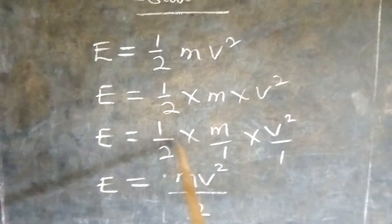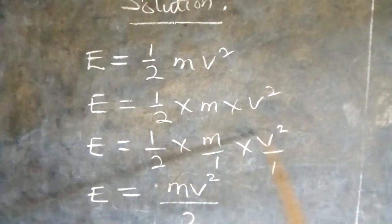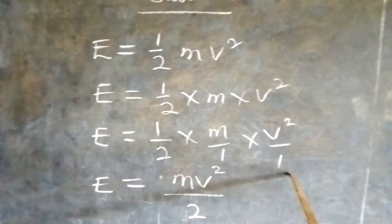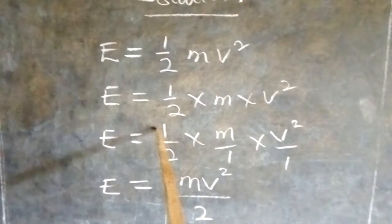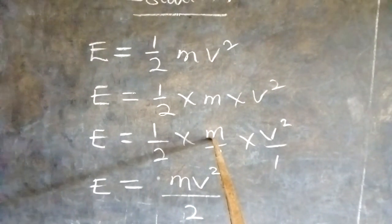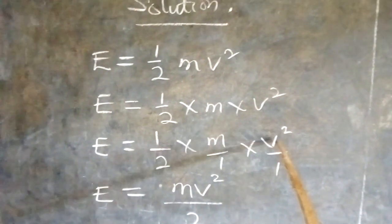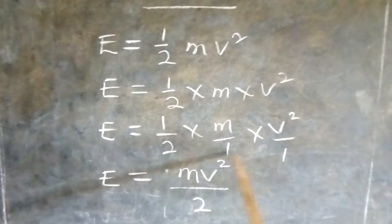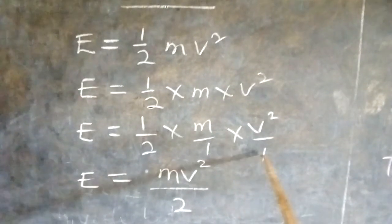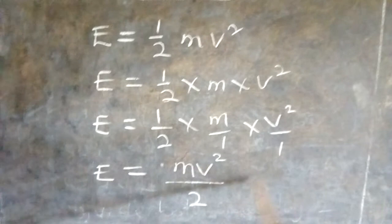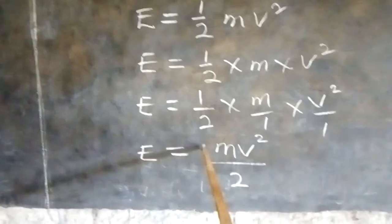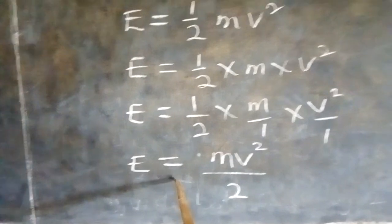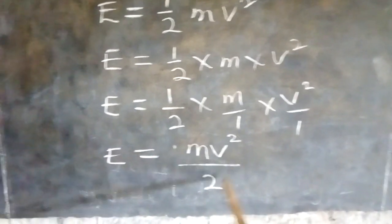In that way, we have all these as our numerator and all these as our denominator. 1 multiplied by m, that is m. Then multiplied by v squared, we have mv squared. 2 multiplied by 1, that is 2. Multiplied by 1 again, that is 2. We have 2 here. So, we have E equals mv squared all over 2.